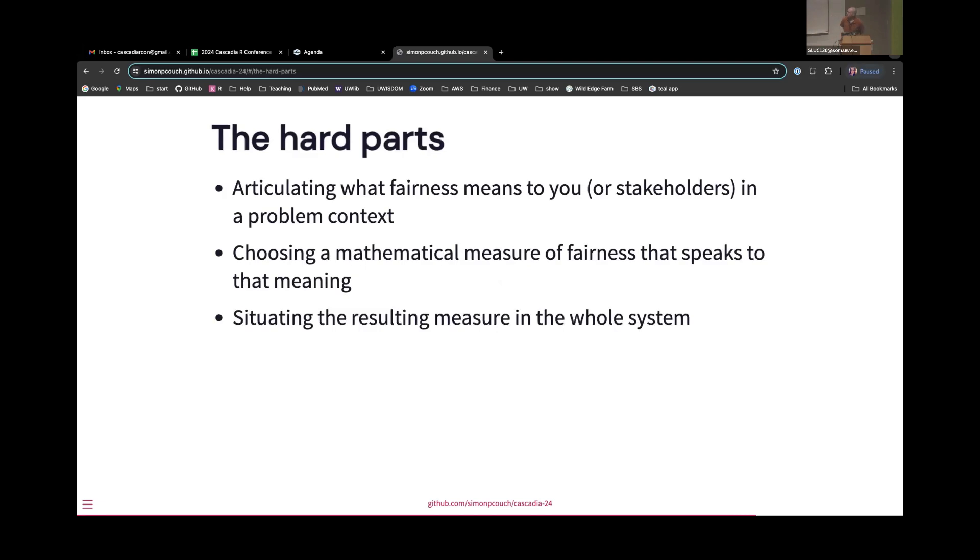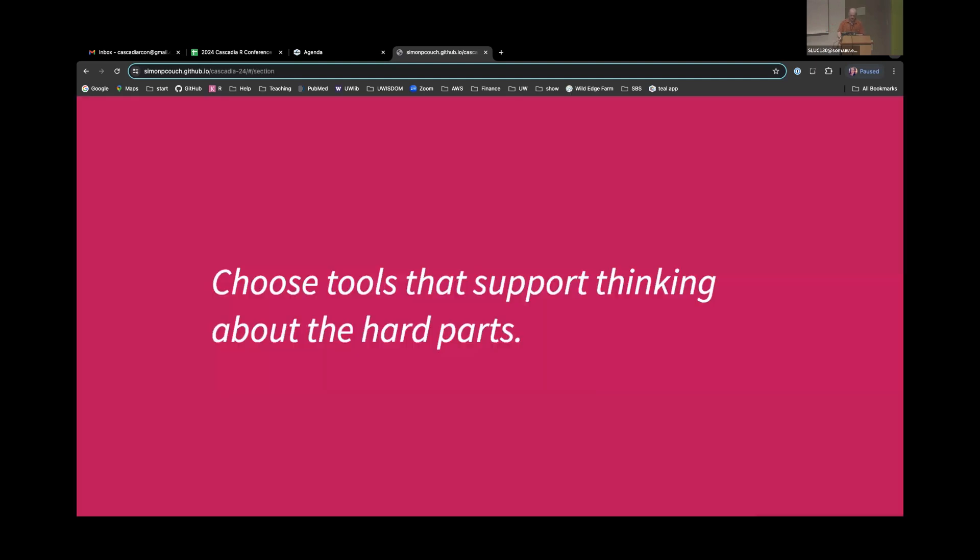So I've tried to outline three hard parts, is what I call them, of machine learning fairness. Much of the statistical software that's out there is kind of focused on the second one, choosing and supplying a bunch of different mathematical measures that we can drop into our existing machine learning systems, optimize on the value of the metric, and tell our stakeholders that our model is fair. But I want to argue, or I've tried to argue to you today, that the other two parts of this process are just as important for actually aligning our beliefs with our machine learning systems, and I would encourage you to choose tools that support thinking about the hard parts.